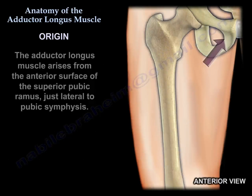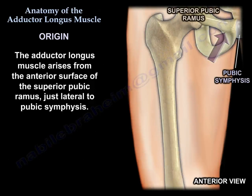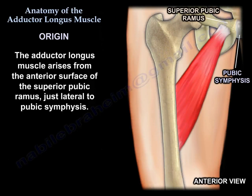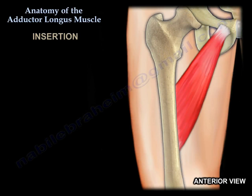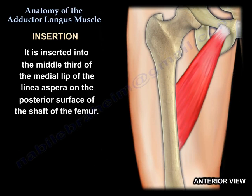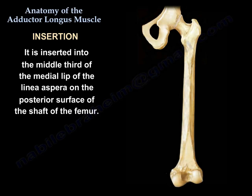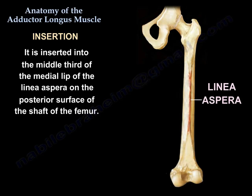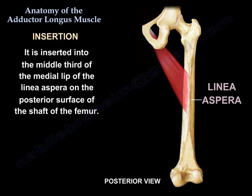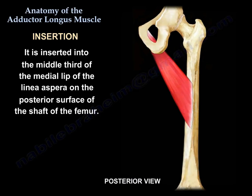Origin: the adductor longus muscle arises from the anterior surface of the superior pubic ramus, just lateral to the pubic symphysis. It is inserted into the middle third of the medial lip of the linea aspera on the posterior surface of the shaft of the femur.